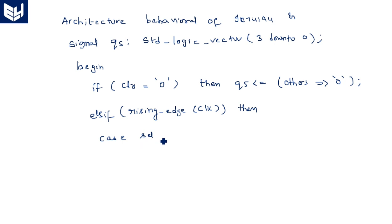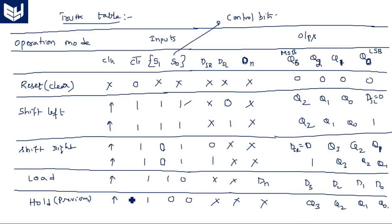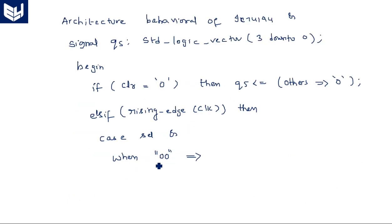The selection pin is the control input. We use a case statement on 'select'. When the selection is 0,0 — that is hold operation — holding operation means the same previous data. So QS is loaded with QS. The data won't change.